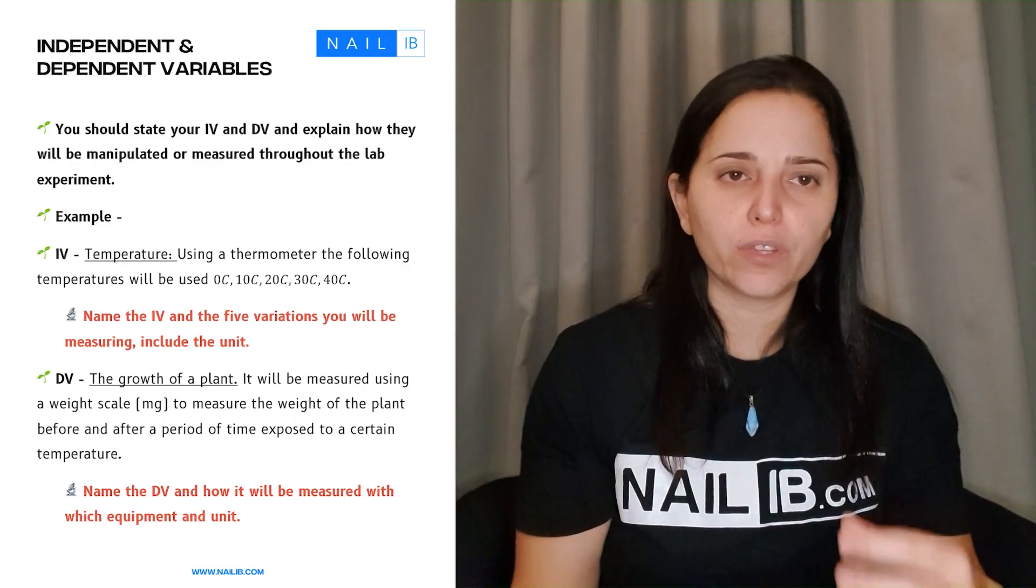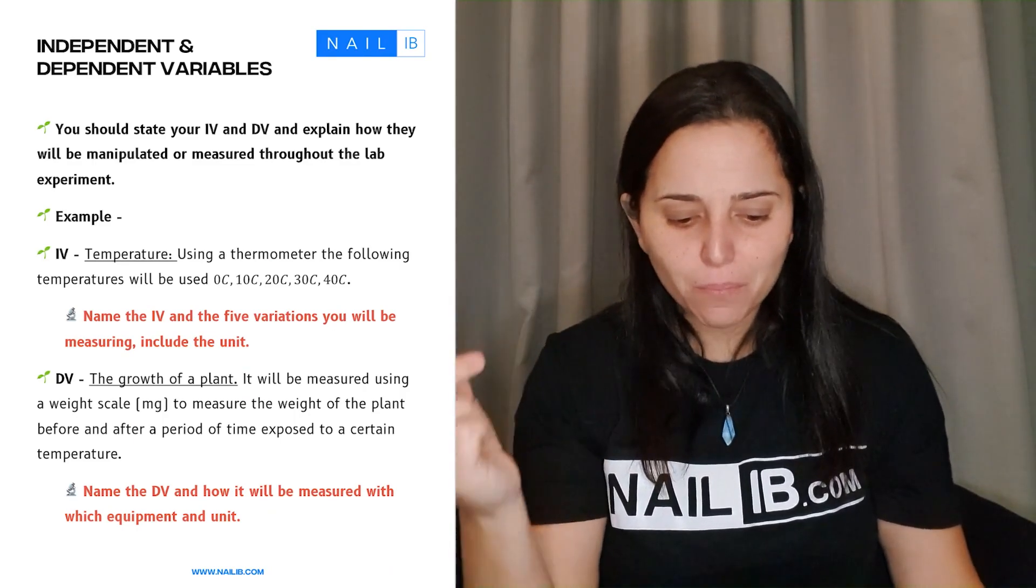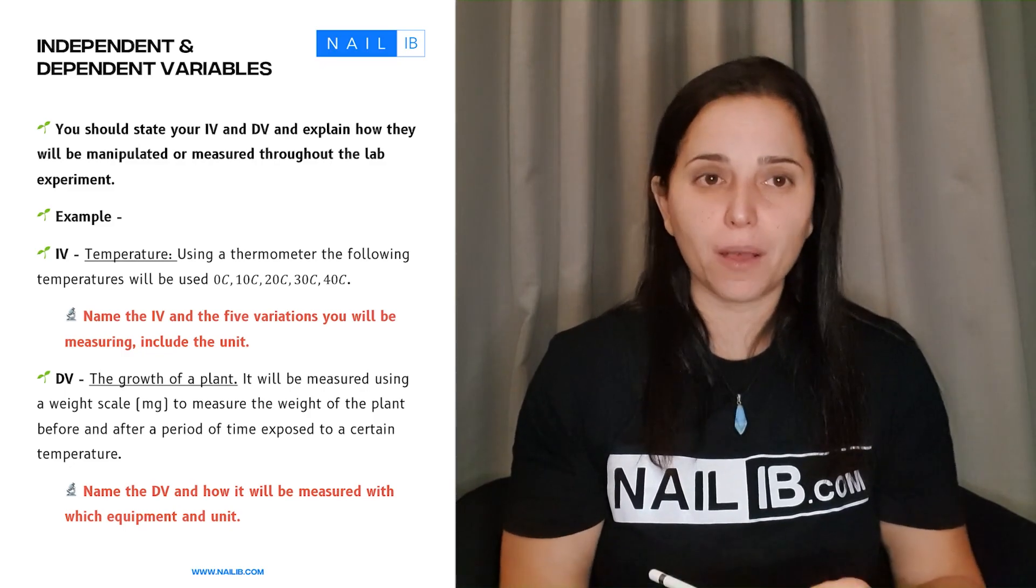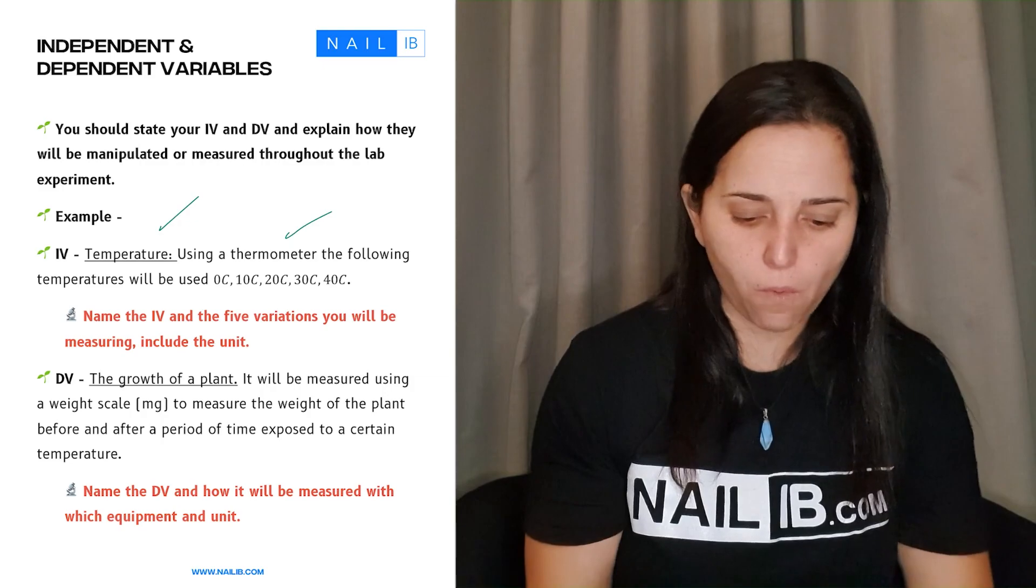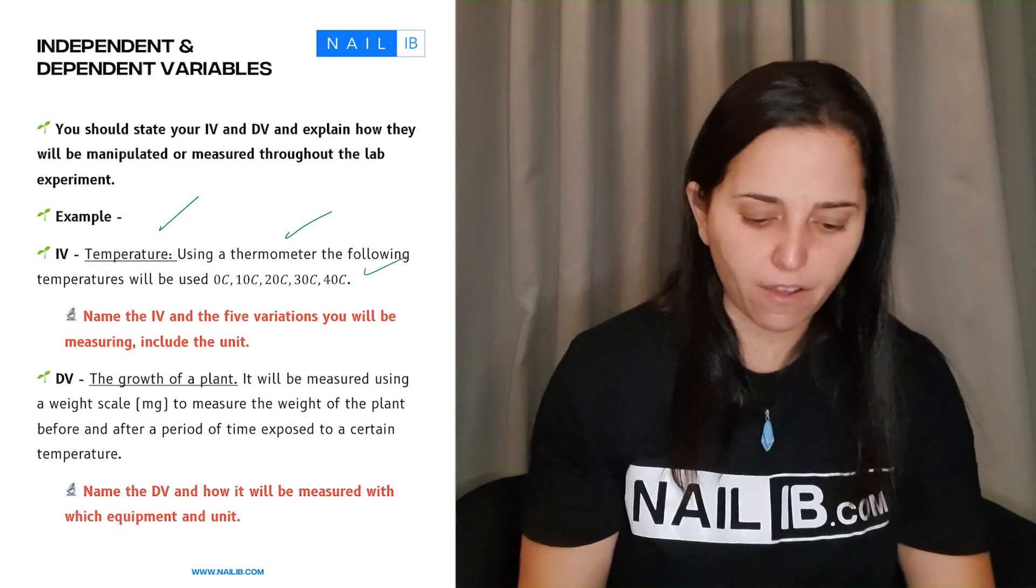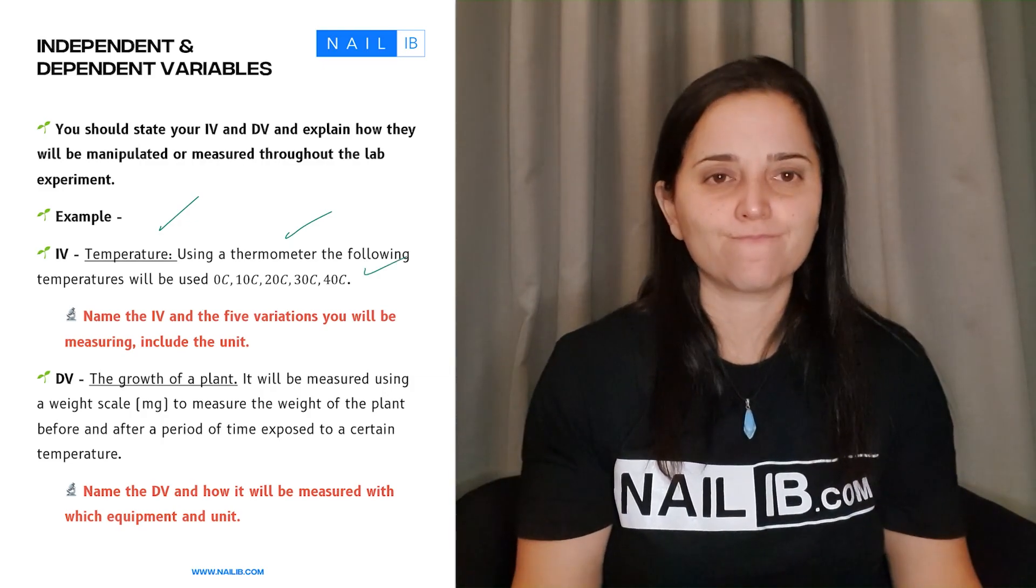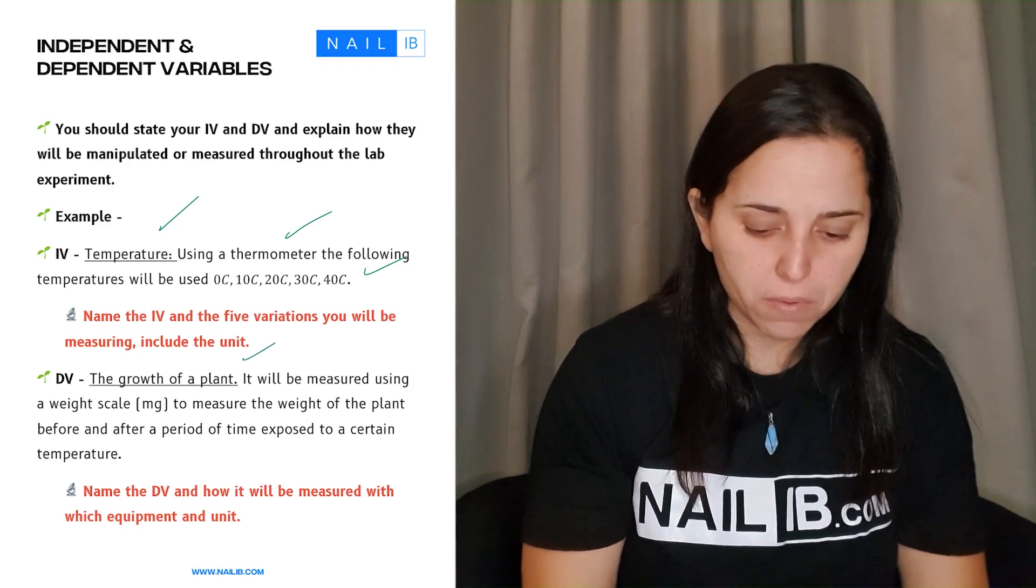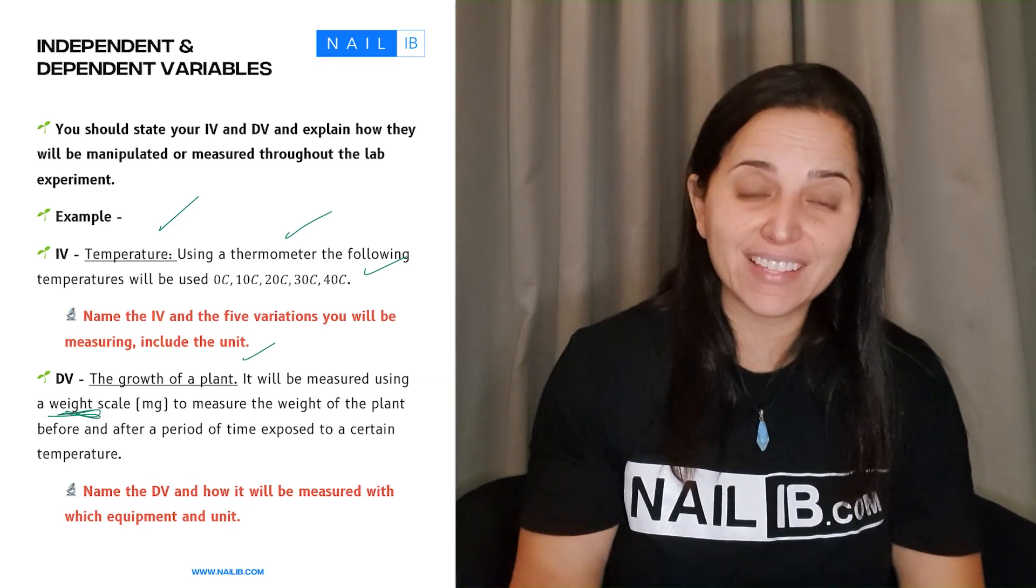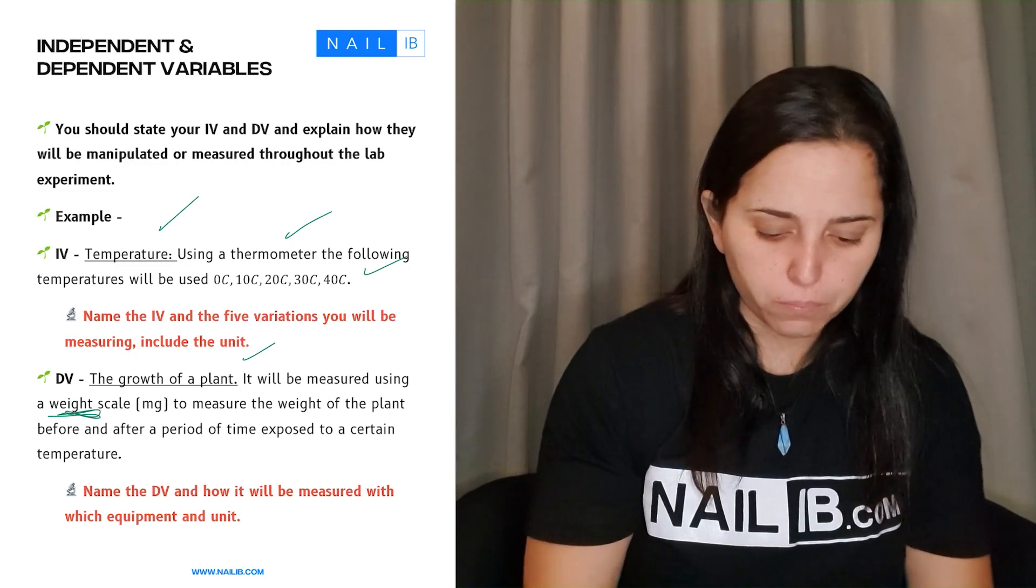So we already know that the independent variable is the one manipulating the independent variable. So here I'm going to give you examples again. So independent variable temperature. Using a thermometer and look at this, you have the five variations there, including unit. Another one, dependent variable, the growth of plants. You'll be measuring using what? A weight scale and again, periods of time exposed.